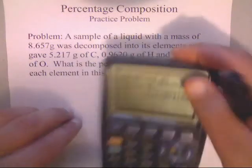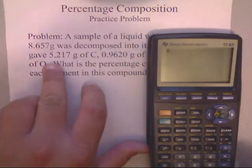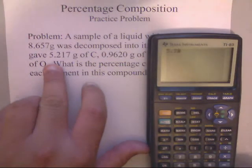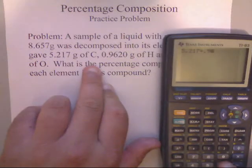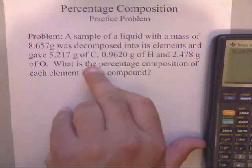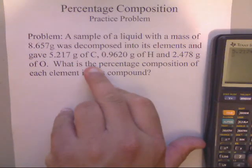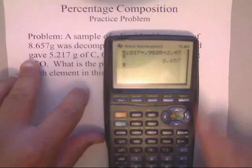First, you need to make sure the numbers they've given you add up to 8.657. Clear the calculator and punch this in: 5.217 plus 0.9620 plus 2.478. And lo and behold, it does.